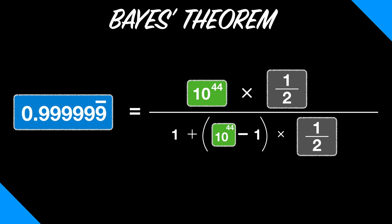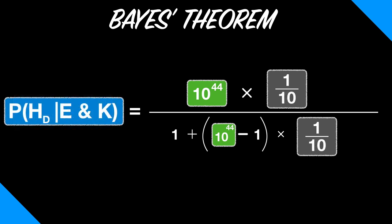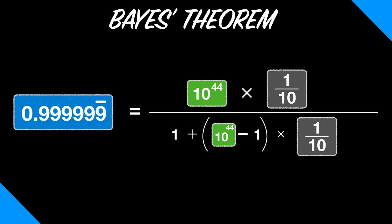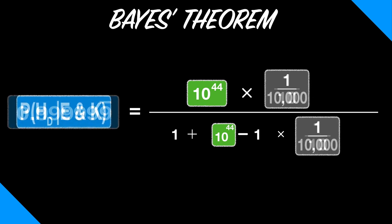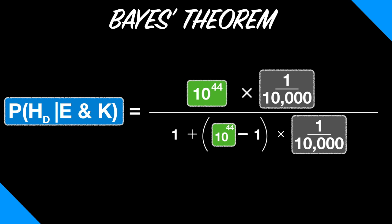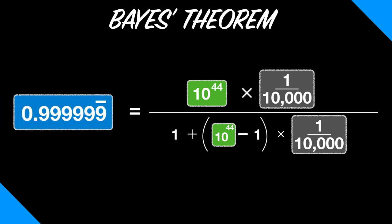If instead you think the prior probability is 1 in 10, there's a 10% chance of there actually being a universe designer. The posterior probability is still 0.9999999. Say you think it's really low, like 1 out of 10,000. The posterior probability is still 0.9999999.